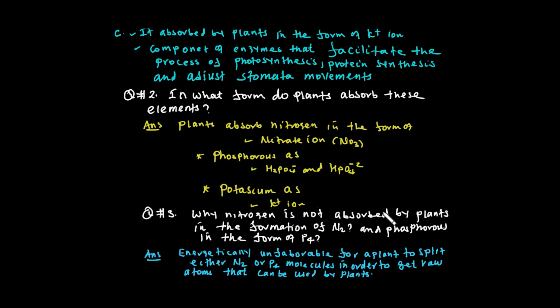Question 3: Why is atmospheric nitrogen not directly absorbed by plants? The nitrogen molecule (N₂) and phosphorus molecule are very stable. It is energetically unfavorable for plants to split N₂ or P₄ molecules to obtain raw atoms. Therefore, plants must absorb nitrogen and phosphorus in ionic form rather than as elemental molecules.